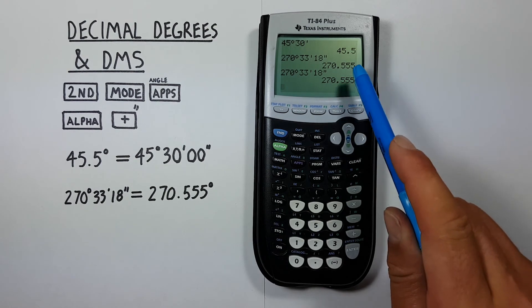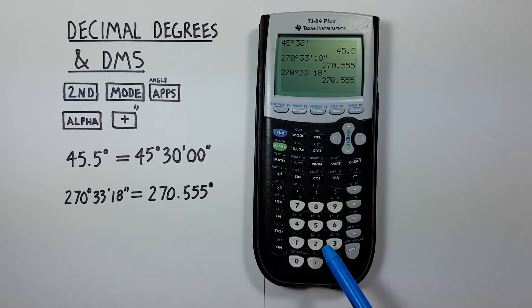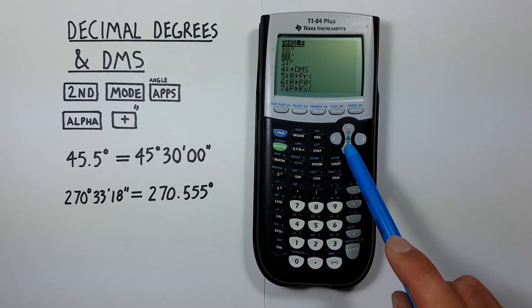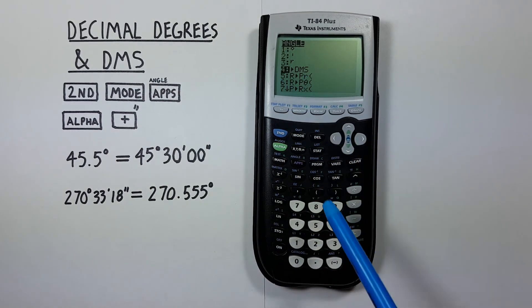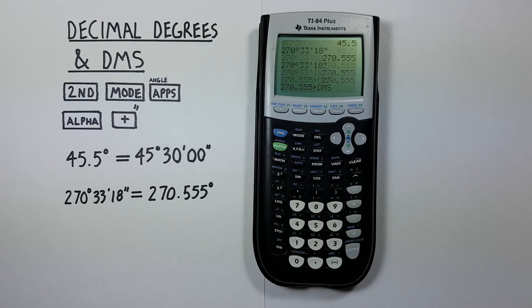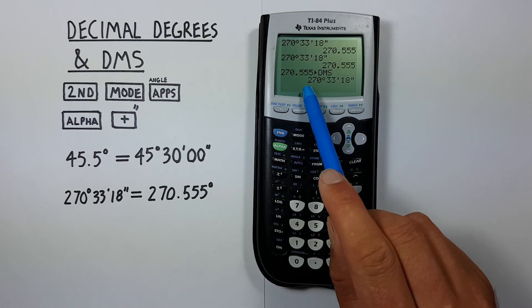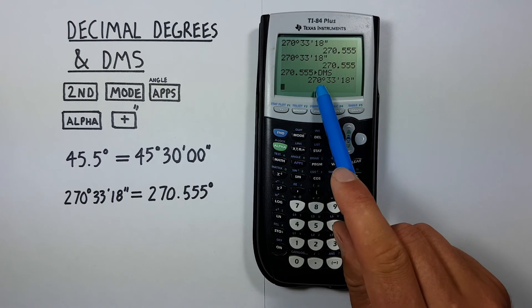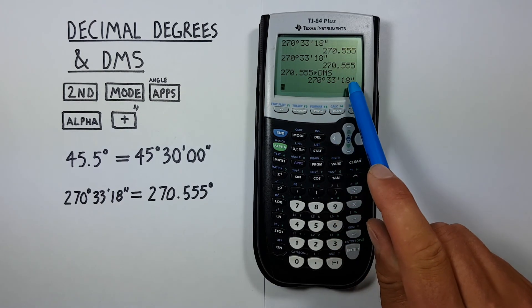And we can do this the opposite way by entering 270.555, going back to our angle menu, selecting the fourth option, pressing enter, and converting that to degrees, minutes, seconds, which is 270 degrees, 33 minutes, 18 seconds.